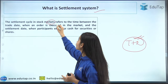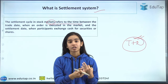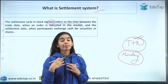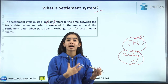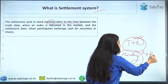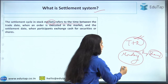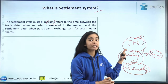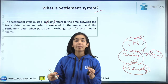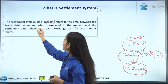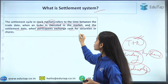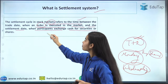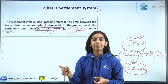The settlement cycle in stock markets refers to the time between the trade date — when I place or execute my order, say on Monday — and when the money and shares actually get settled. If I am buying shares, it takes trade plus two days for those shares to come into my demat account, meaning by Wednesday. So within 48 hours after the trade, the settlement happens — shares come into the buyer's account and money goes to the seller's account.